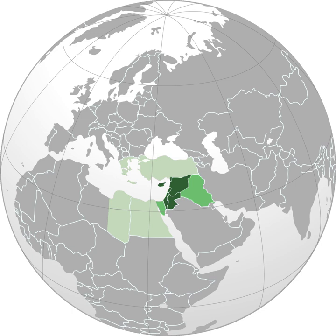The English Levant Company was founded in 1581 to trade with the Ottoman Empire, and in 1670 the French Compagnie du Levant was founded for the same purpose. In early 19th-century travel writing, the term sometimes incorporated certain Mediterranean provinces of the Ottoman Empire, as well as independent Greece. In 19th-century archaeology, it referred to overlapping cultures in this region during and after prehistoric times, intending to reference the place instead of any one culture. The French Mandate of Syria and Lebanon was called the Levant States.